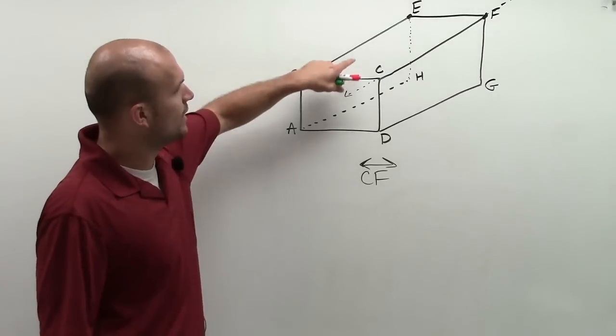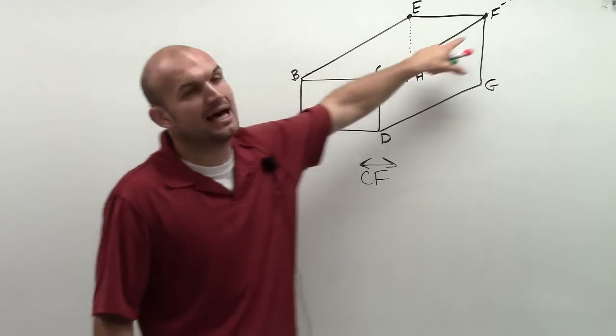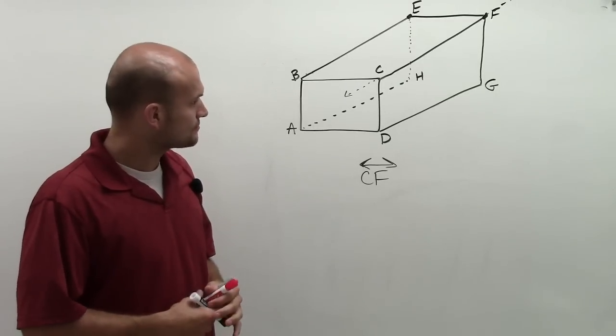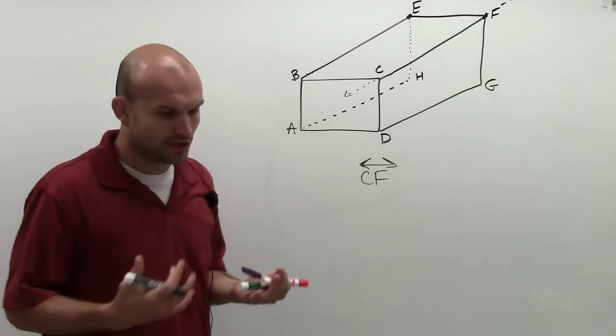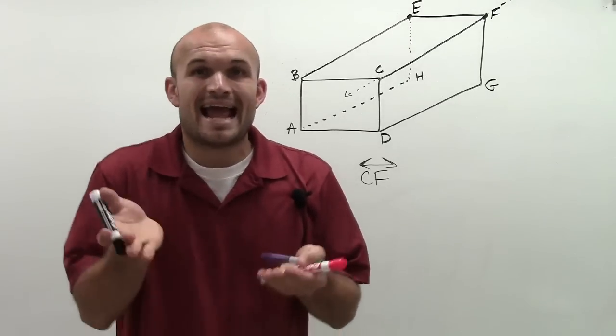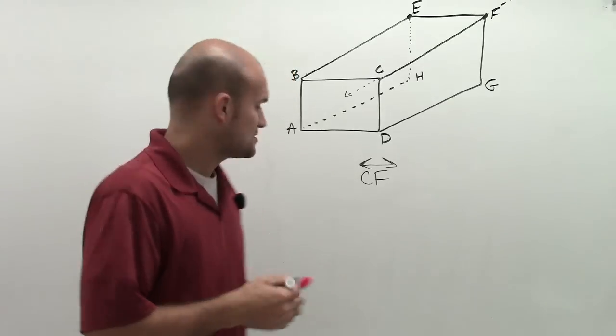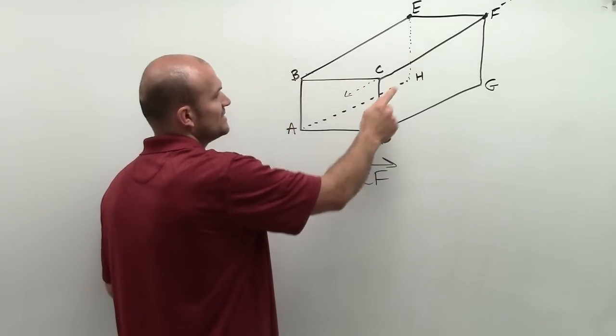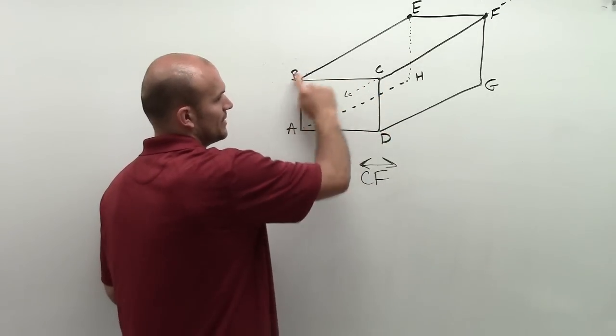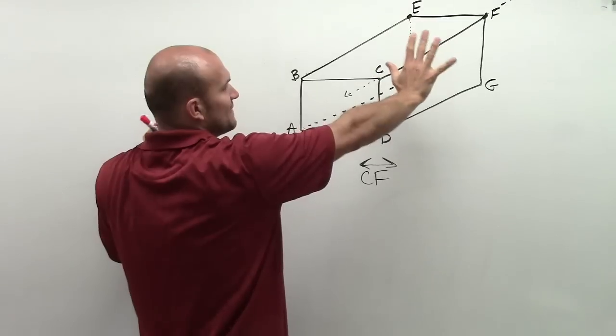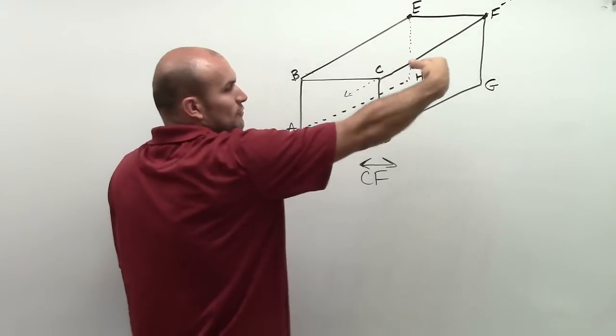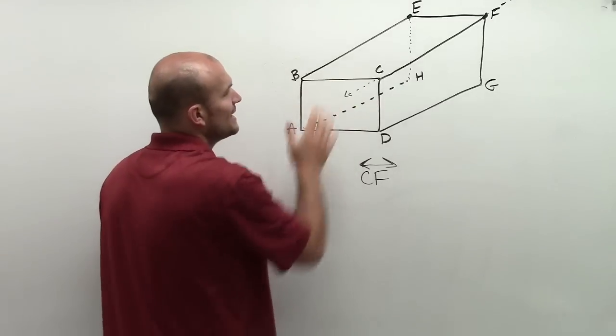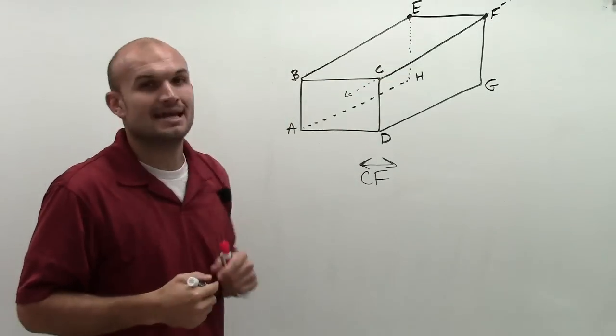So I need to look at what two planes contain the line CF. Now, remember, what I need to do is look at that line has to lie on the plane. So let's look at this first. Let's pretend I had the plane ABC with this whole plane up here. If I was to extend this infinitely, my line CF would go through the plane. But it wouldn't actually lie on the plane. So therefore, this plane does not contain the line CF.